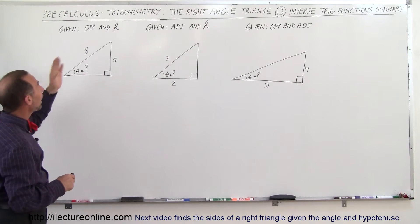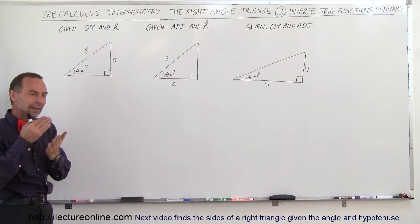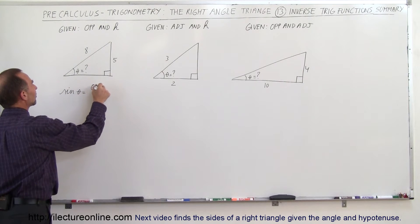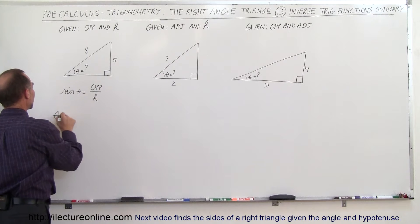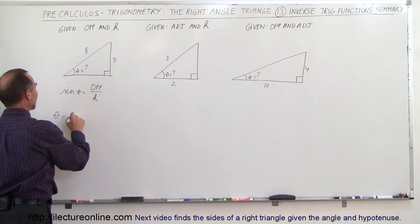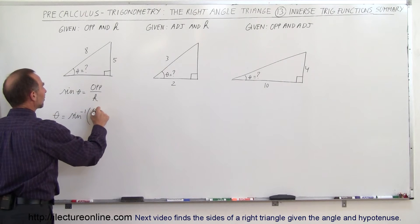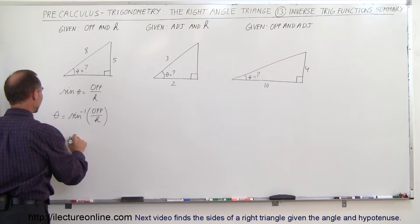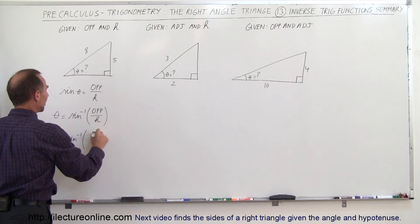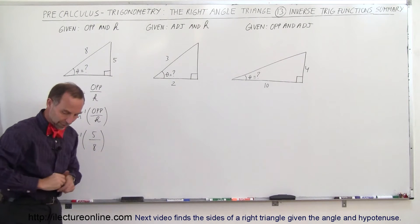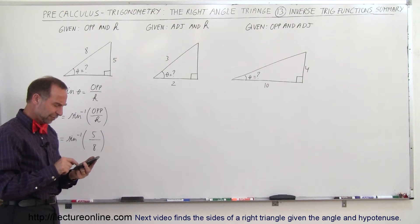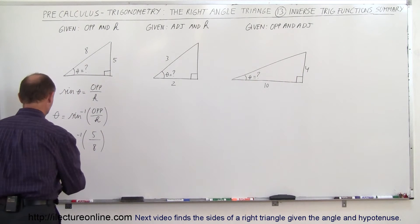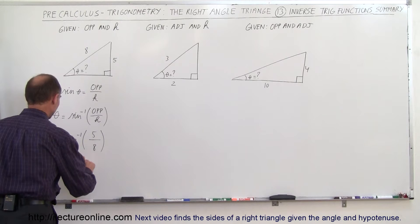In the case of the opposite side and the hypotenuse, that's the sine of theta, because by definition the sine of theta is equal to the ratio of the opposite side divided by the hypotenuse. This means theta can be found by taking the inverse sine of the opposite side divided by the hypotenuse. In this example, theta equals the inverse sine of 5 divided by 8, which gives you 38.7 degrees.